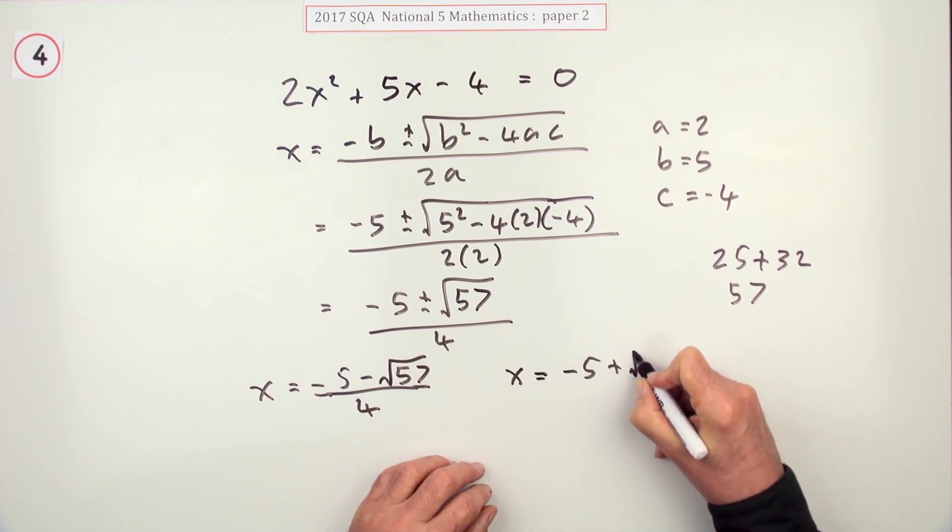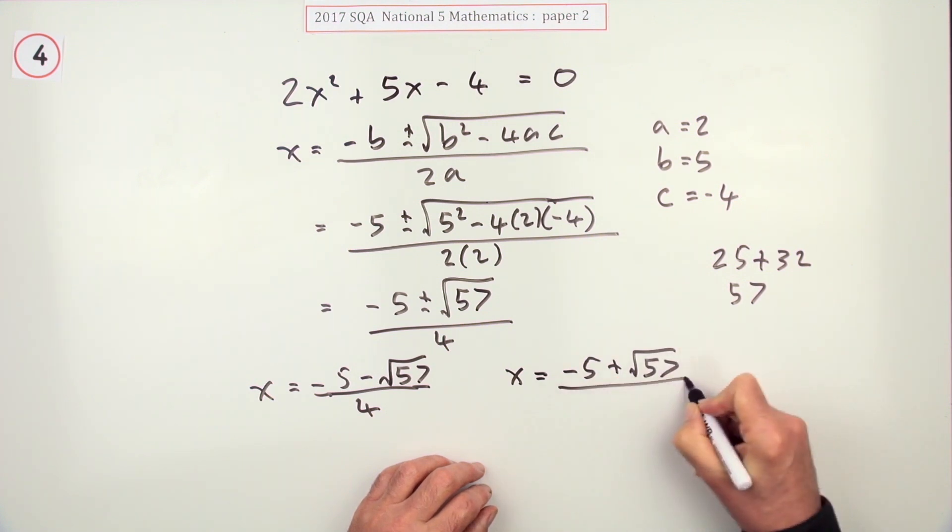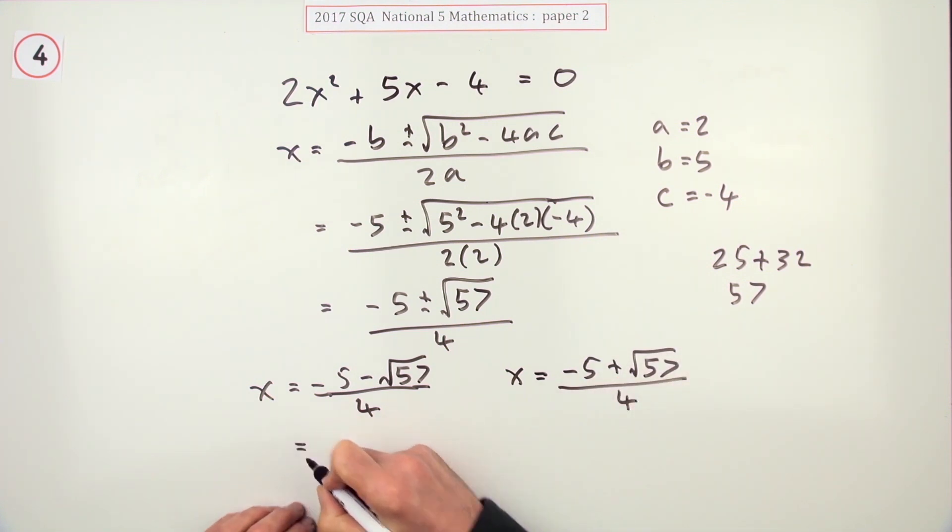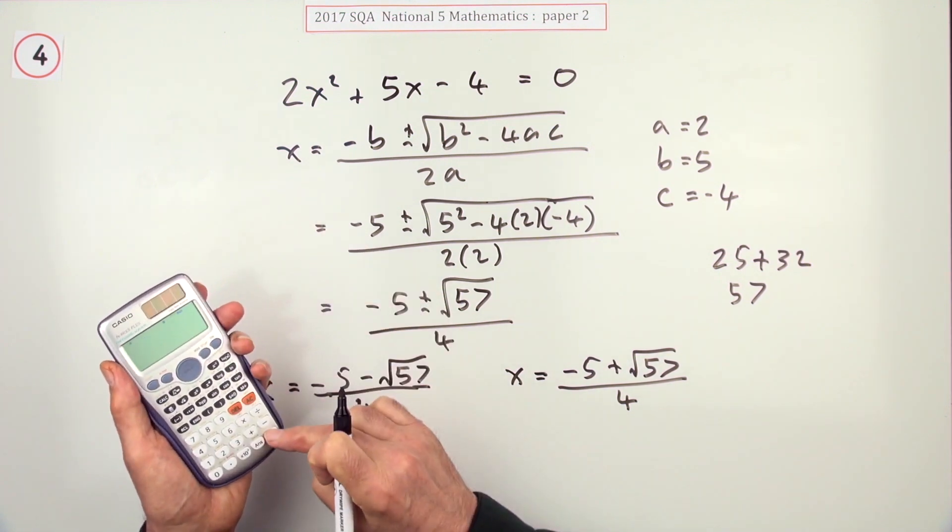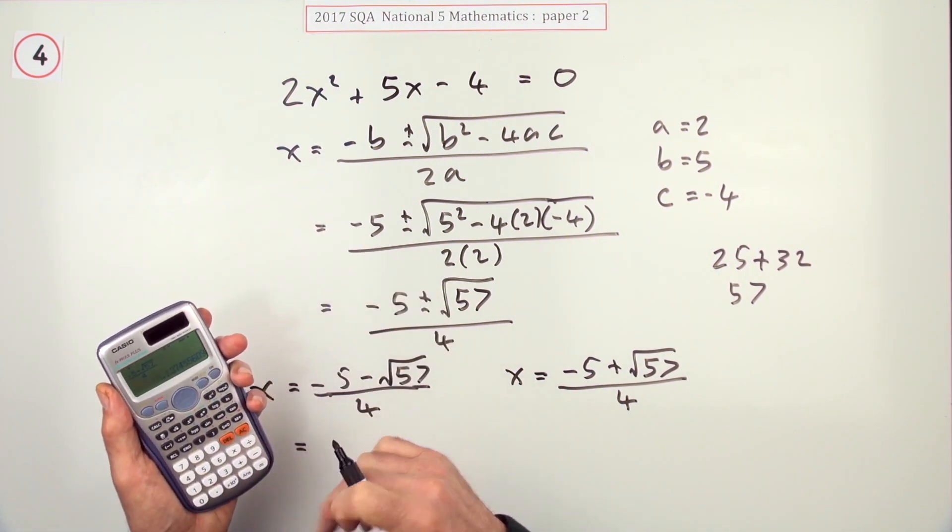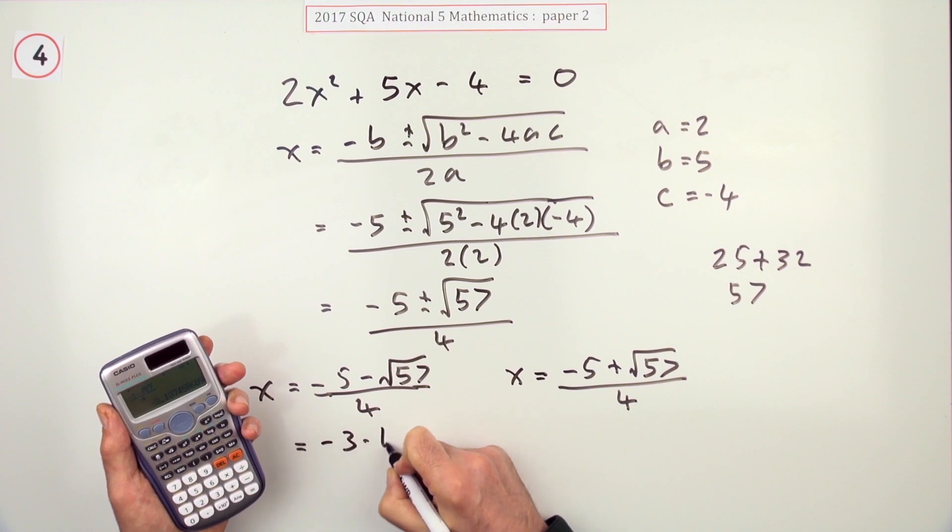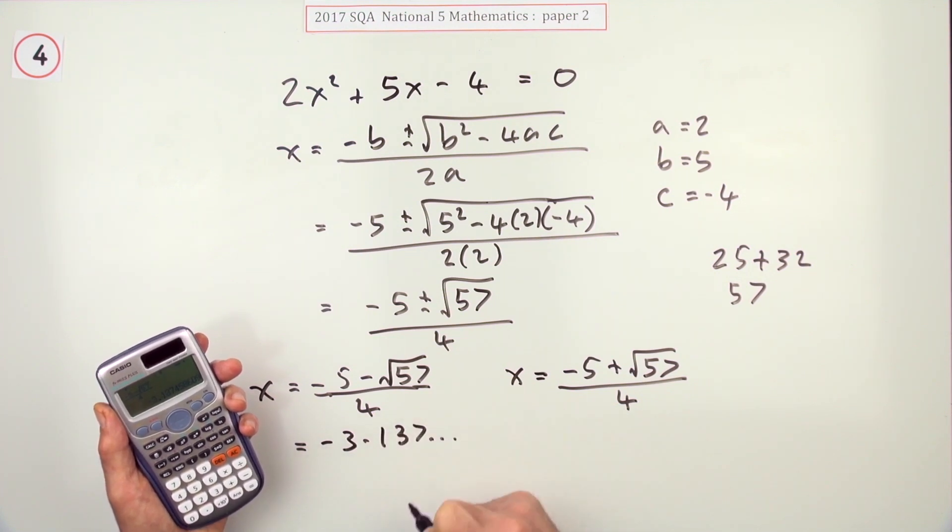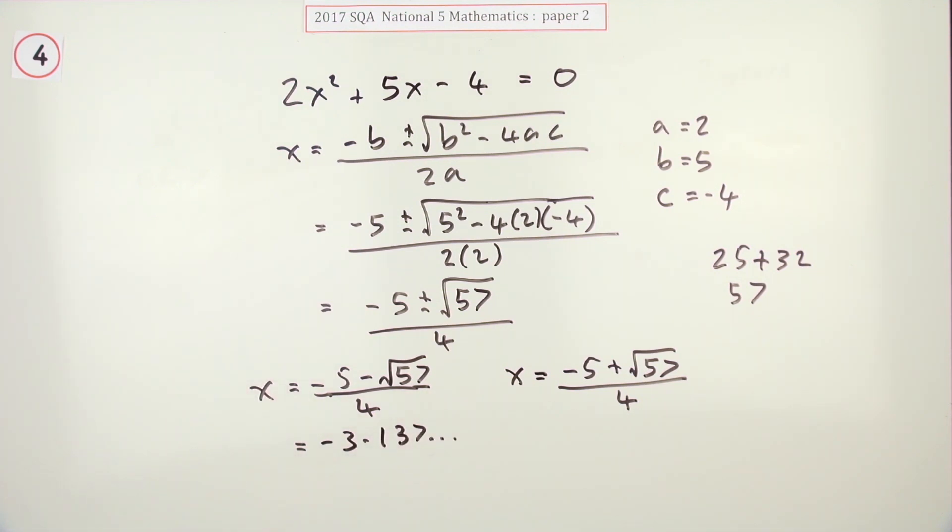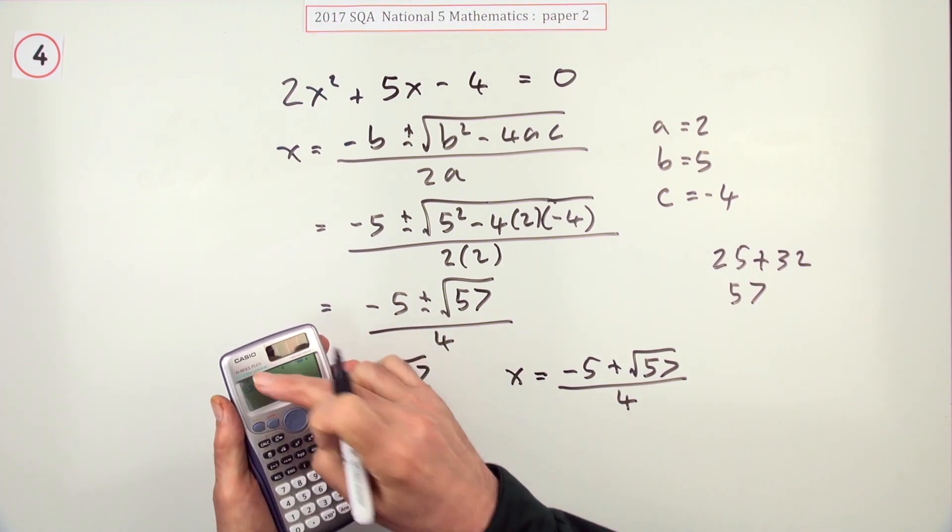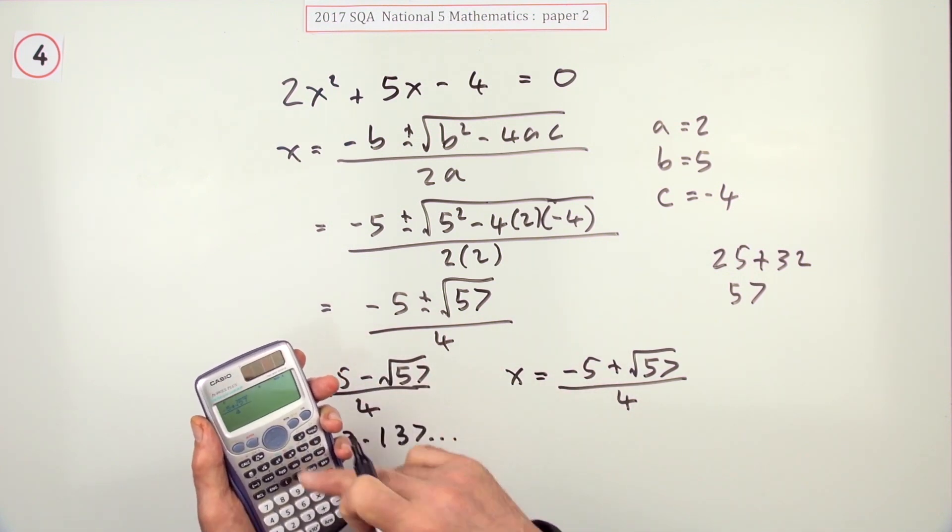x equals -5 plus it. So what are the two answers? Typing this one in gives you, annoyingly, -3.137 and so on. Then just using replay to change the minus into plus, or just doing it again...